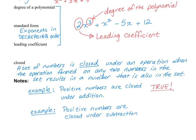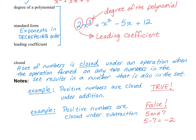Let's say positive numbers are closed under subtraction. That means I take any two positive numbers, subtract them, and the result is also a positive number. I would say that is false. Anytime you say something is false, you have to give a counterexample. My counterexample is five and seven, because if I take those two positive numbers and subtract them, I end up with a negative number, and that negative number is not positive. So that statement is false.